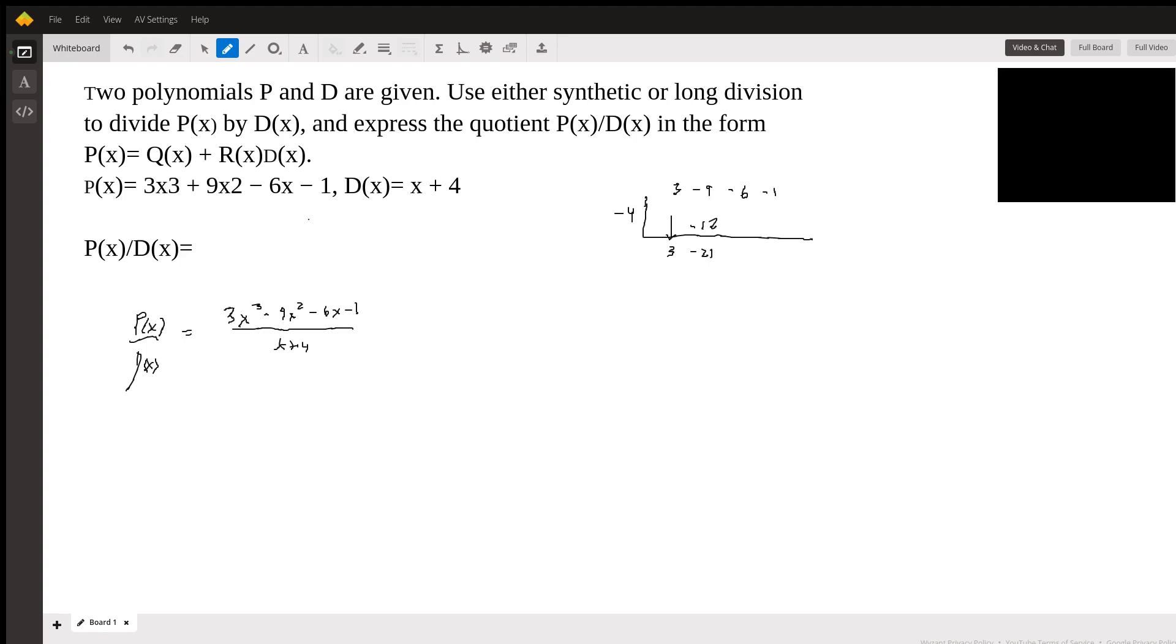I need a calculator. Negative 4 times negative 21. That's 84.